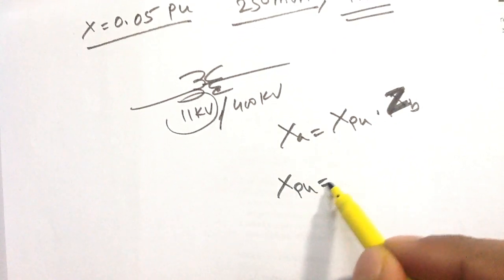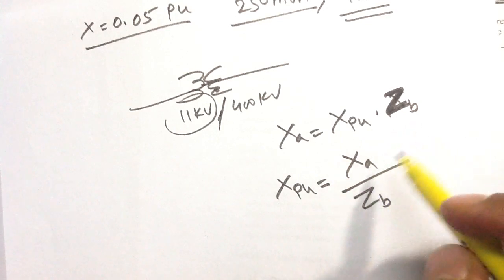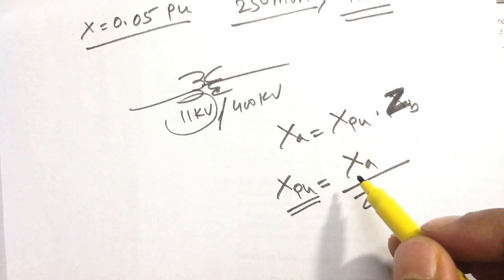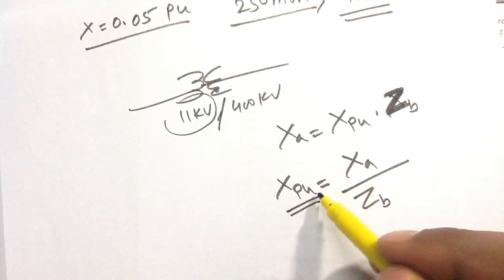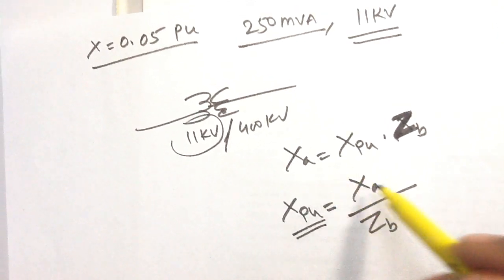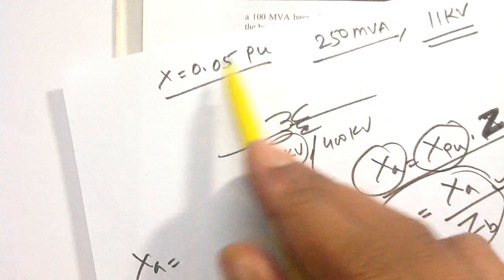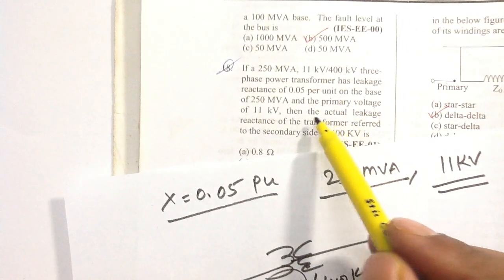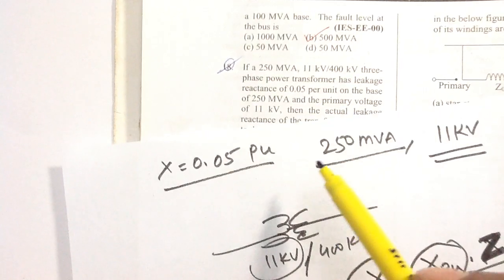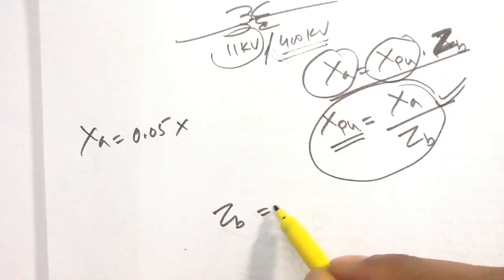Per unit reactance equals actual value of the reactance divided by base impedance. Therefore, x actual equals x per unit value multiplied by Z base. Since we need the actual leakage reactance referred to the secondary side, we use Z base referred to the secondary side.